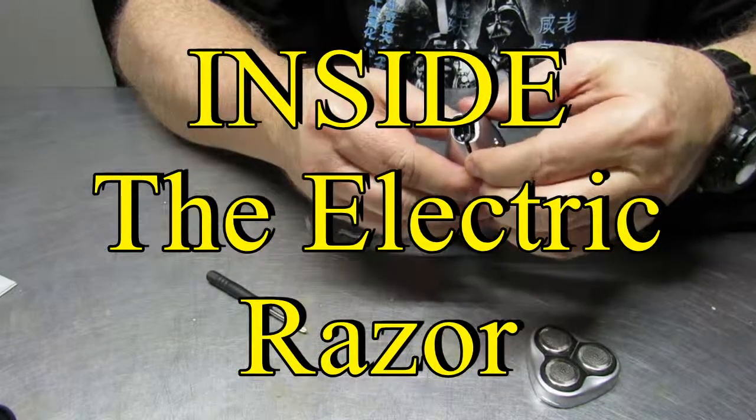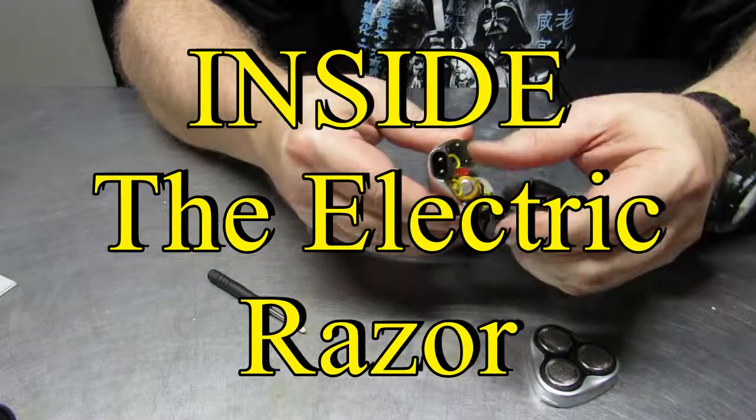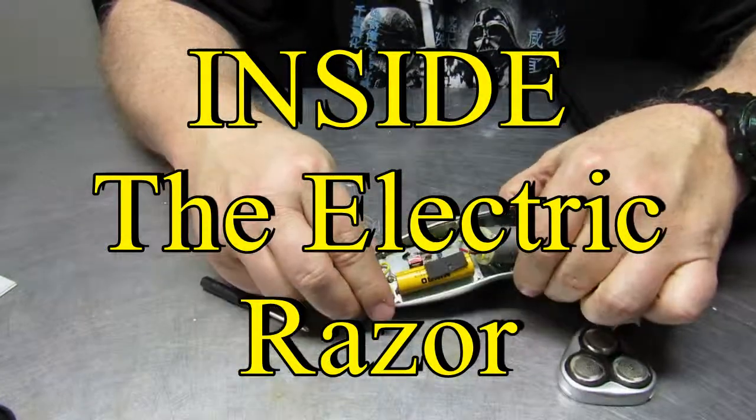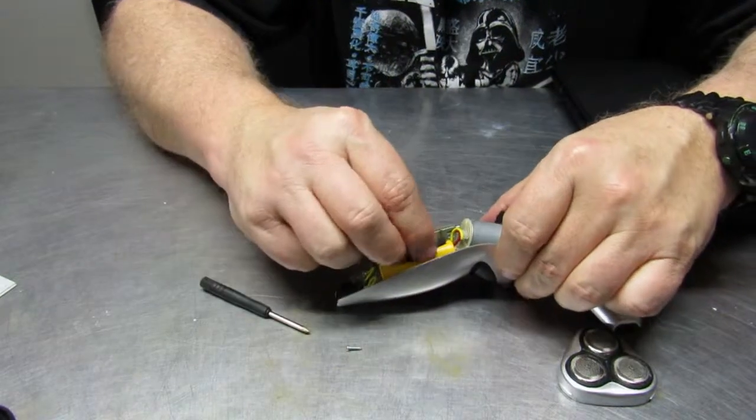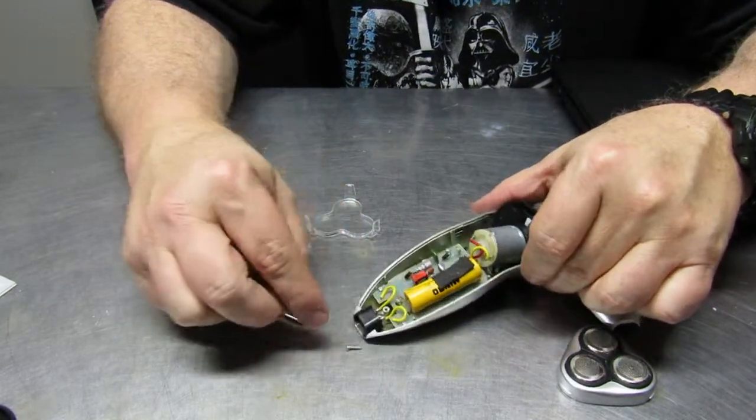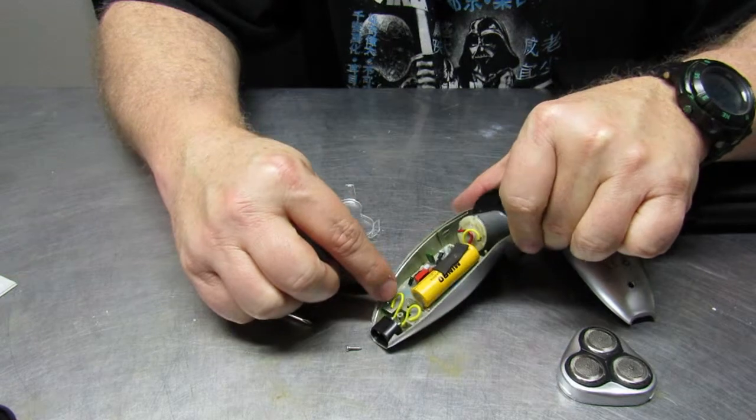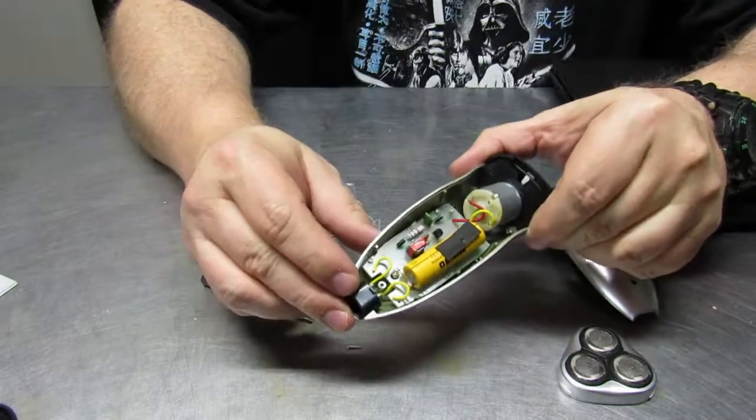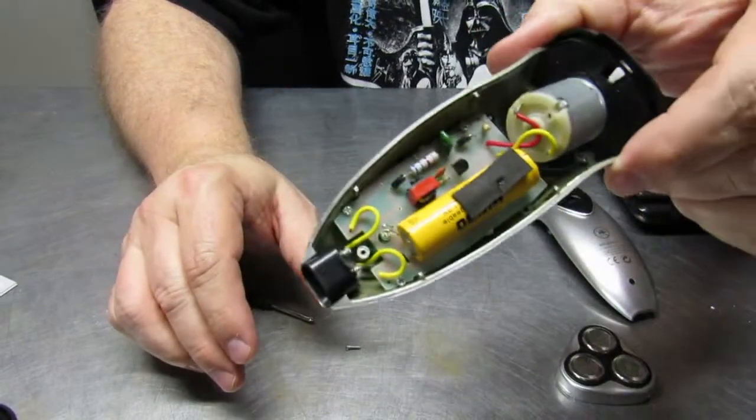Today's two minutes of science is all about what's inside the electric razor. We did another segment where we talked about the electric razor and how it was working. Well today we're going to open it up and take a look at what's inside the razor and how it works.